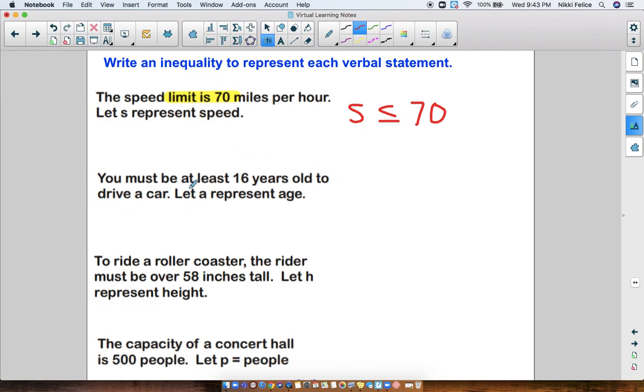Problem number two, you must be at least 16 years old to drive a car. And we're going to let A represent age. So I have A, my magic number is 16. So you need to be at least 16. Are you allowed to drive a car if you're only 10 years old? No, you can't be under 16. You have to be over 16. So A has to be greater than or equal to 16 because you're allowed to be 16 and drive a car. You get your permit when you're 16. So you have to be 16 or older. That is our answer. A is greater than or equal to 16.